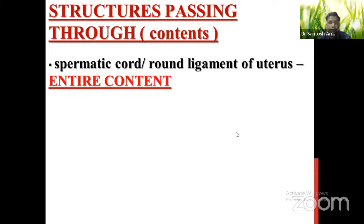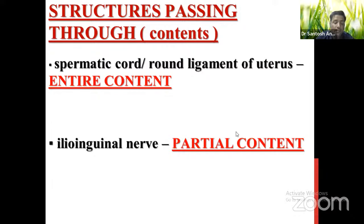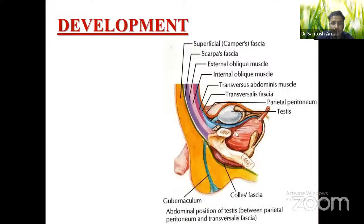The structures passing through the inguinal canal are the spermatic cord in males and the round ligament in females. The ilio-inguinal nerve is a partial content — it does not enter through the deep inguinal ring but pierces the posterior wall and exits through the superficial inguinal ring.